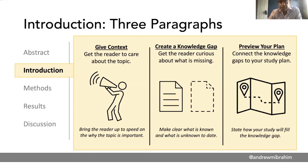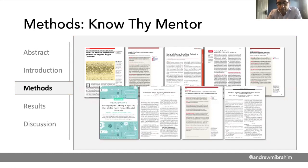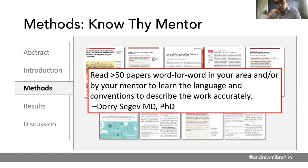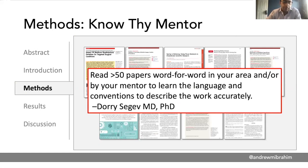It may feel weird to be that concise, but that's actually one of the most important tricks to being a clear and effective writer — sometimes write less. For the methods section, there was a famous researcher at Johns Hopkins named Dory Segev who frequently said you should read at least 50 papers, word for word, in your area and by your mentor, to understand the language and conventions. Don't invent or make up the methods section on your own. Read papers that use similar methods and similar datasets, and learn the language. Often your mentors at Michigan will have done similar work and can be a great source.